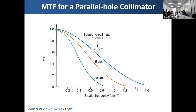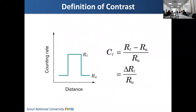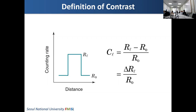Let me now move to contrast. The simple definition of contrast: R0 is the background level and RL is the counting rate — the intensity in the region of interest. The contrast is the ratio between the difference between the region and background, over the background: (RL - R0) / R0.